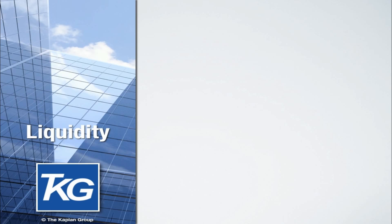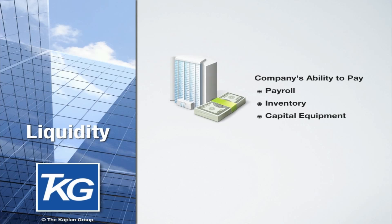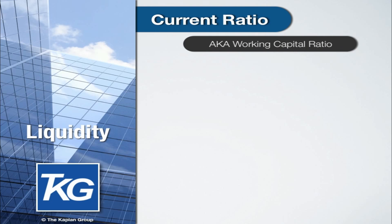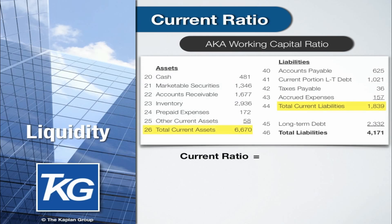The first area we are going to look at is liquidity. This is essentially how easily can the company pay from existing assets for its ongoing expenses, including payroll, inventory, and investments in capital equipment. As with the income statement, the easiest way to analyze a balance sheet is to look at ratios. The first ratio we are going to look at is called the current ratio, and sometimes is referred to as the working capital ratio.